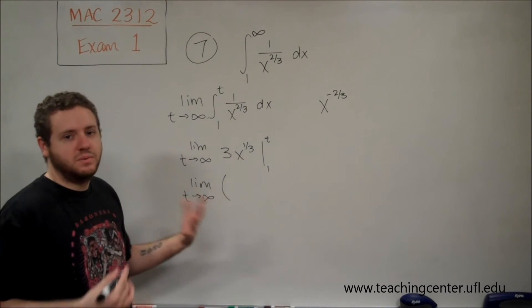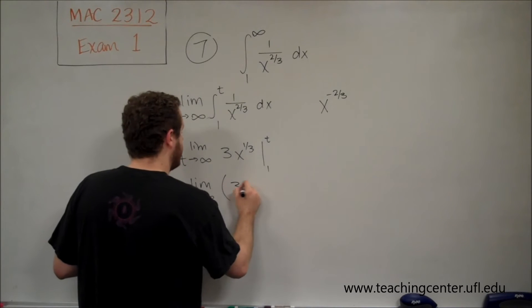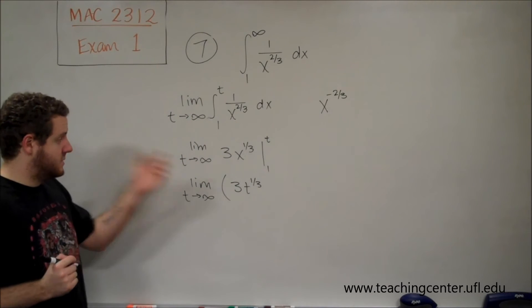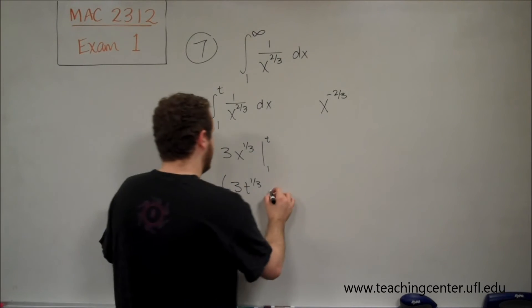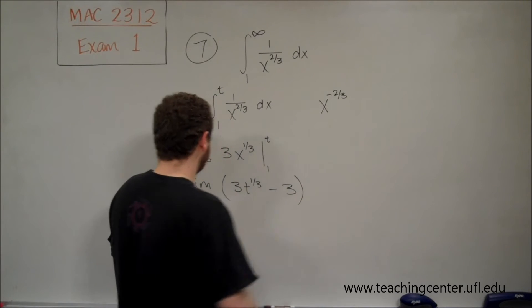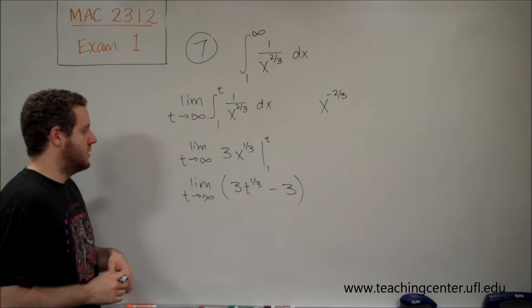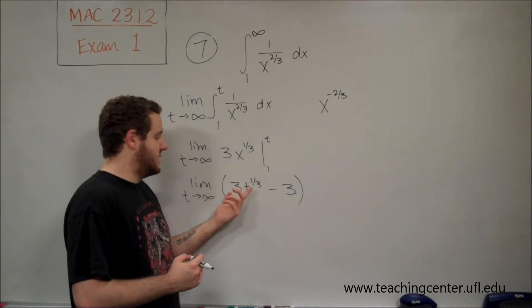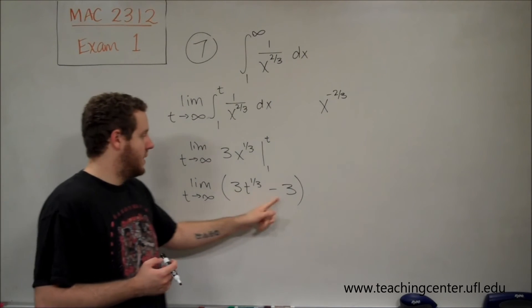What we would have is, if we plug in t, we just get t. So we have 3t to the 1/3. When we plug in 1, 1 to the 1/3 is just 1, so we have minus 3.